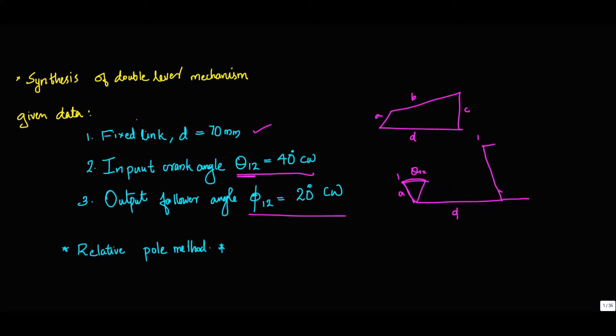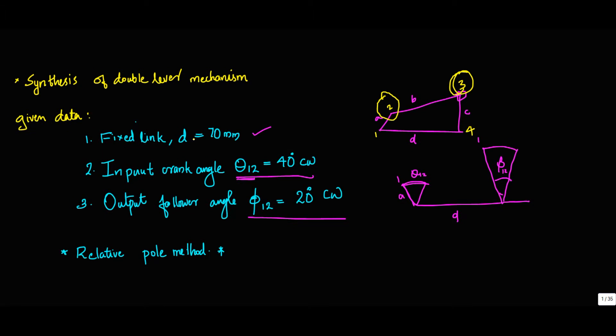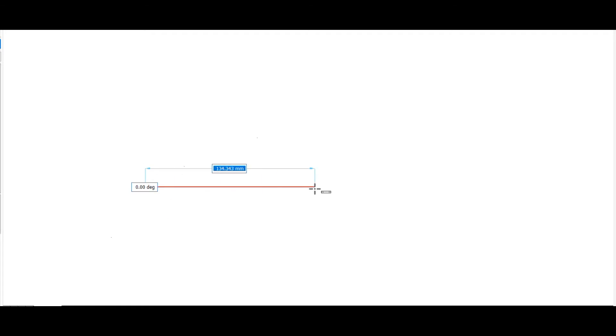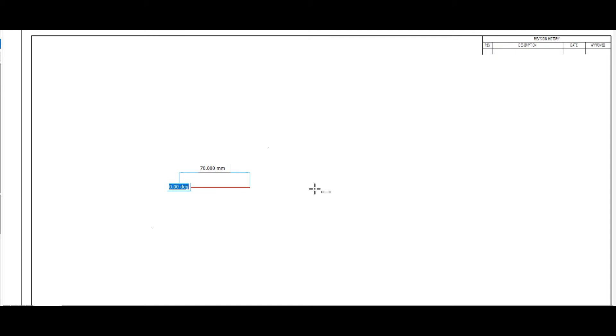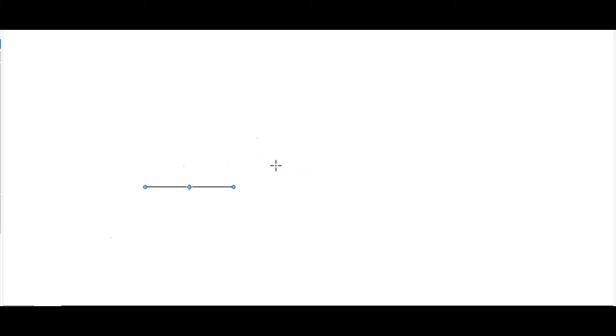The 1st position angle is phi 1 to 2, positions 1 and 2. Now we will construct the first dimension: 70mm. Draw one line of 70mm dimension. This is the baseline — the fixed link — this is 70mm, and this is theta 1,2.